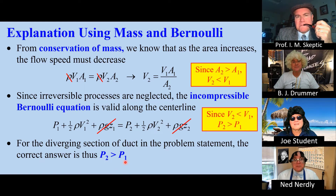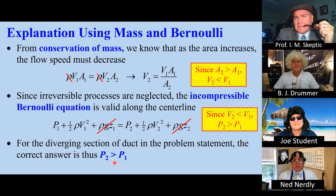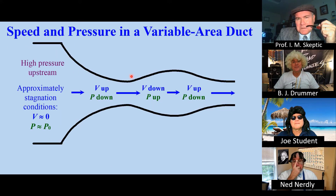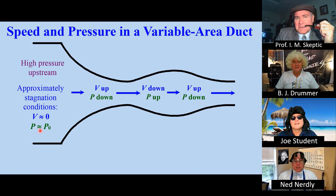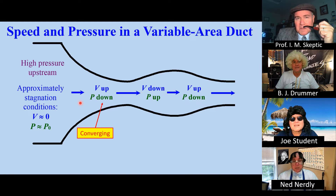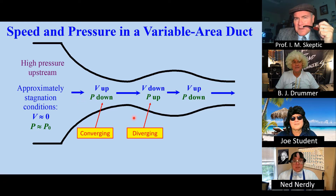But how can the flow go downstream if the pressure upstream is lower? Well, you need to remember that this section of duct is just one section in an overall duct system. Suppose the whole duct looks like this. If the flow is driven by a high-pressure tank, we have approximately stagnation conditions here — this is what drives the flow. But in each section, pressure can go up or down. In the converging part, velocity goes up and pressure goes down. In the diverging part, velocity goes down and pressure goes up.